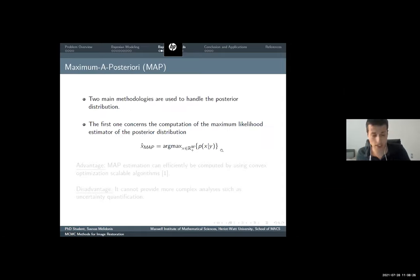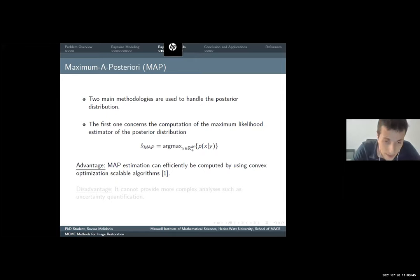There are two main methodologies, as Kosta said. There is the MAP estimator. It is mainly the maximum likelihood estimator or MLE of the posterior distribution. It is a good estimator. Sometimes it has high performance, but it can be efficiently computed by using complex optimization algorithms, which are scalable, which means that dimensionality of the image is not an issue up to this point. The disadvantage is that it cannot provide more complex analysis, such as uncertainty quantification.